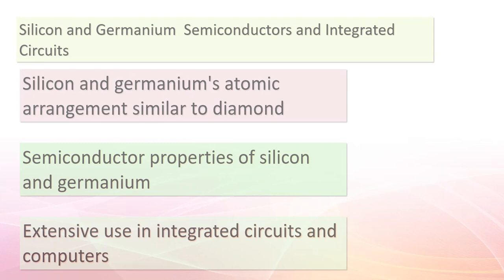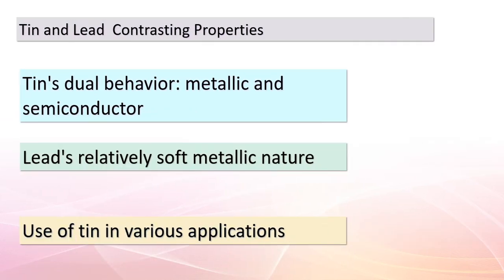Our journey through group 14 takes us to tin and lead — two elements with contrasting characteristics. Tin exhibits a remarkable dual behavior, acting as a metal above 13°C (white tin) and as a semiconductor below 13°C (gray tin). On the other hand, lead stands out as a relatively soft metal whose story is marred by its toxicity. Extensive documentation highlights the hazards associated with lead exposure, emphasizing the critical importance of understanding element properties.